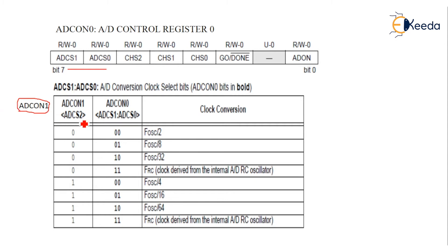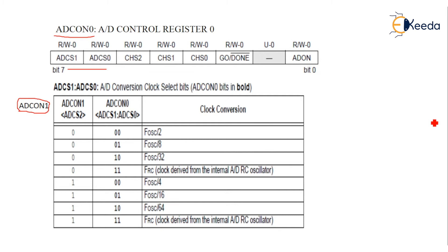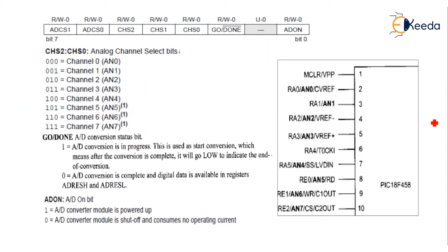ADCS2 and these two bits decide the conversion clock select bits. If it is 0-0 then F-oscillator divided by 2; if 0-0-1, and so on. Keep in mind: two bits come from ADCON0 and the third bit comes from ADCON1. These three bits together decide the clock frequency or conversion time.